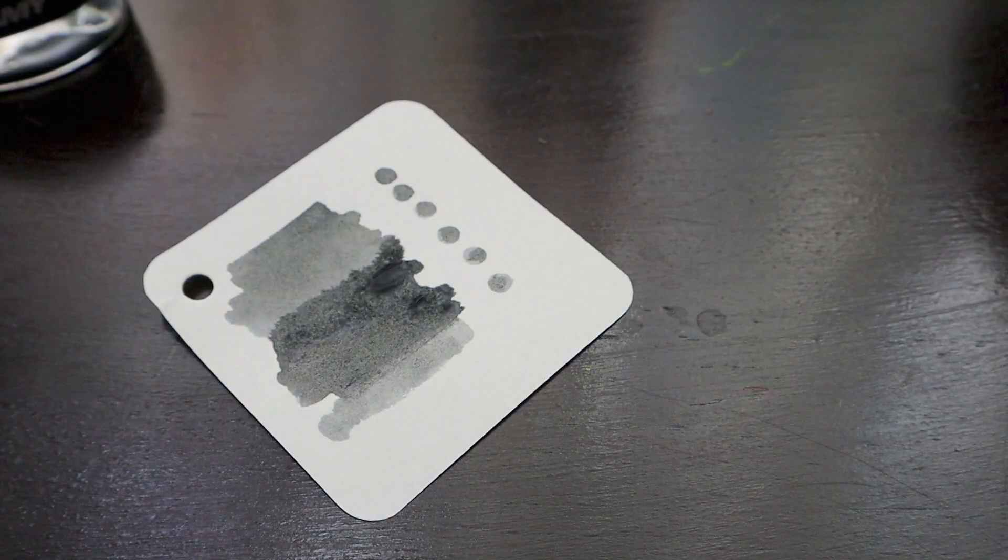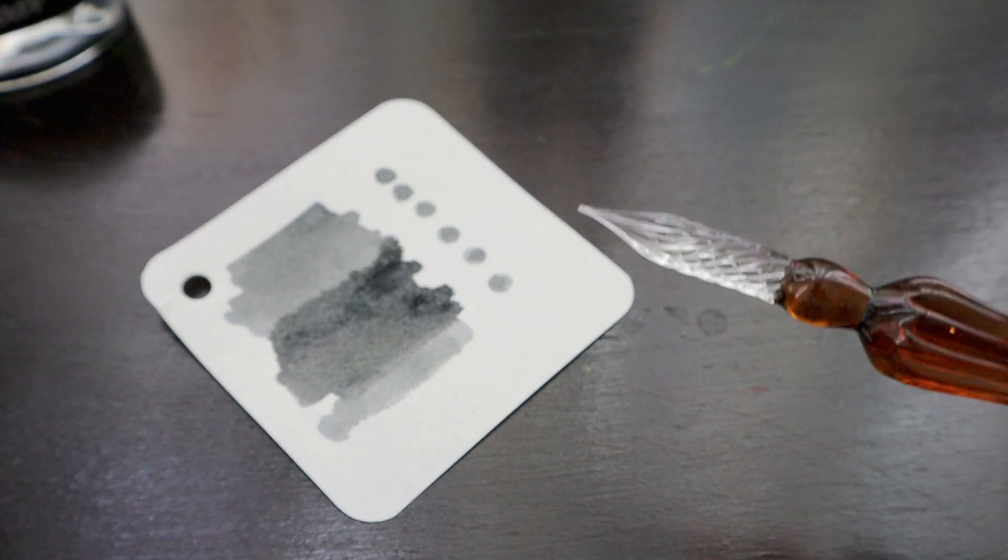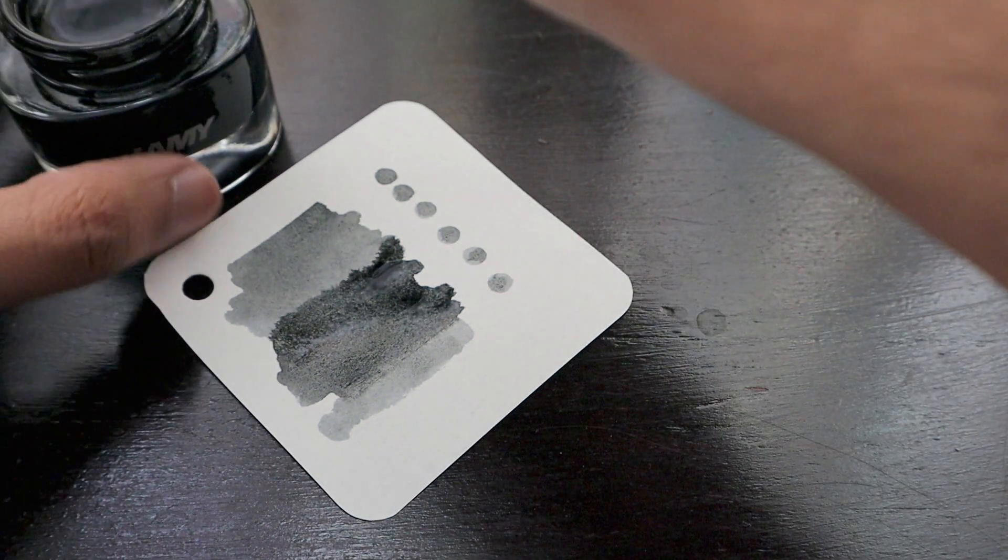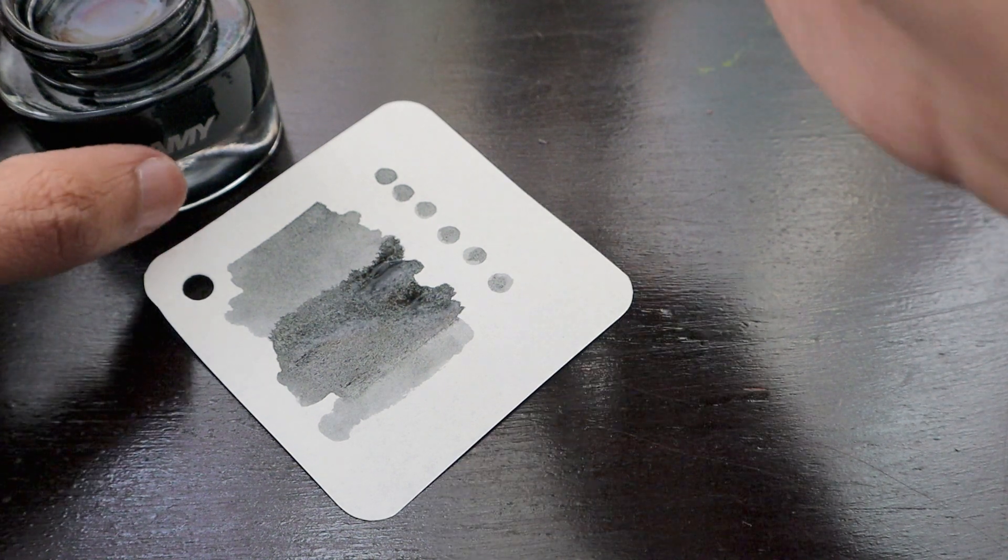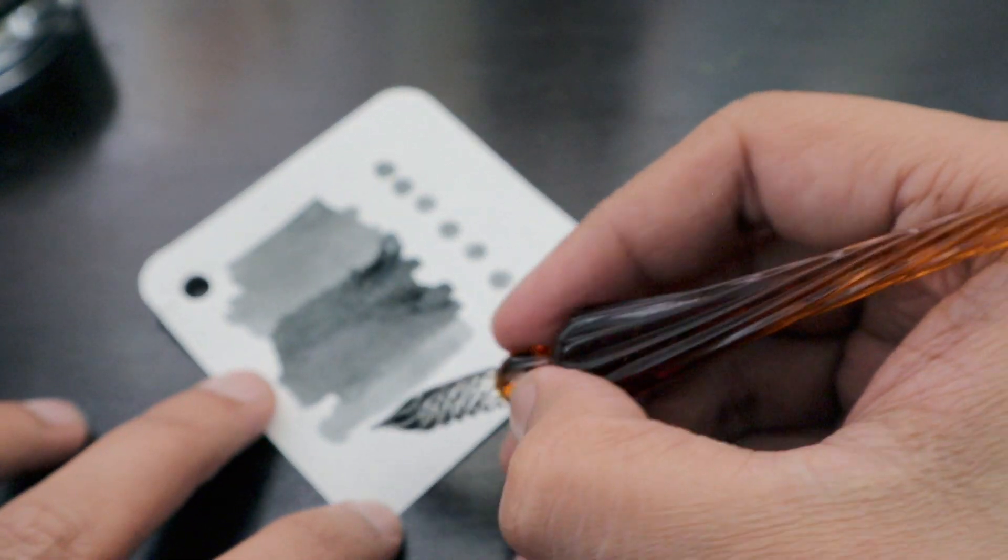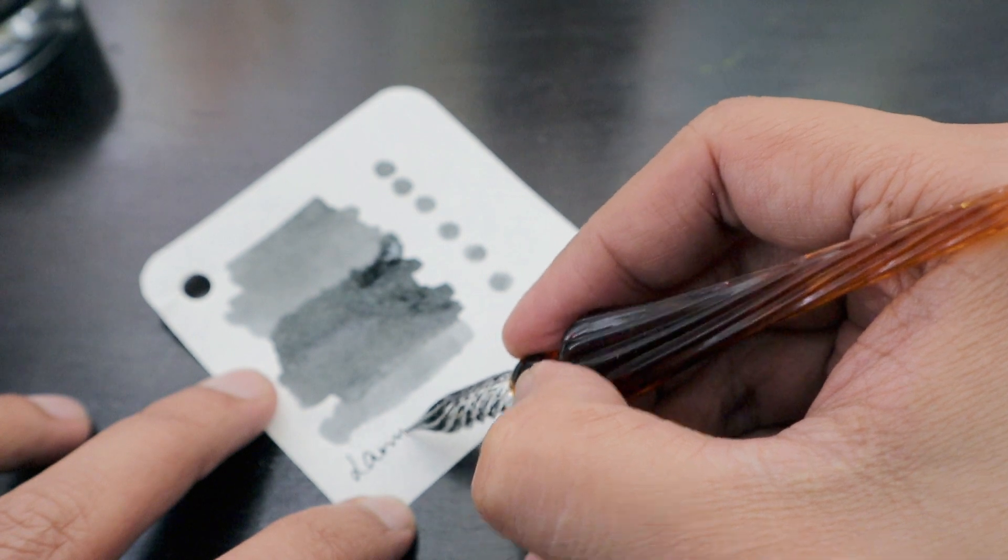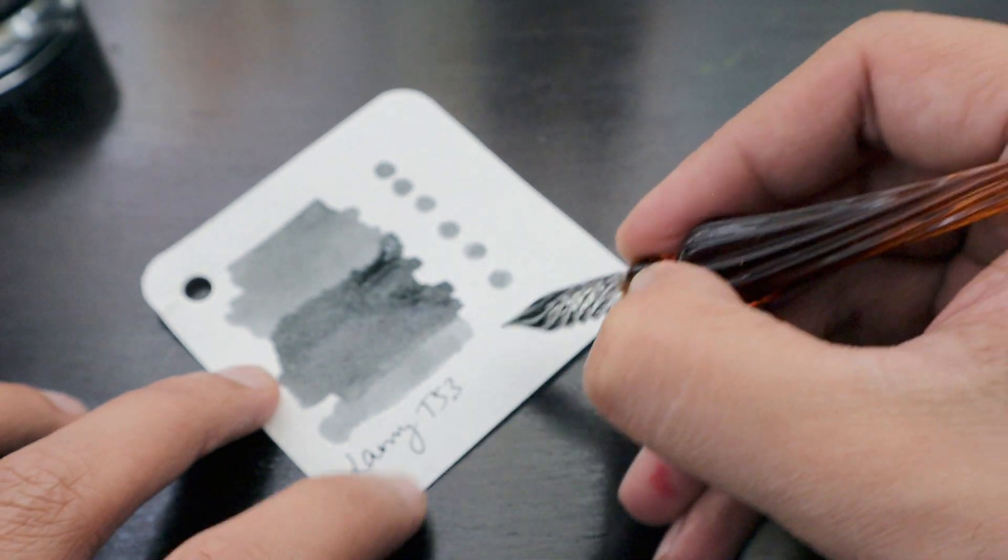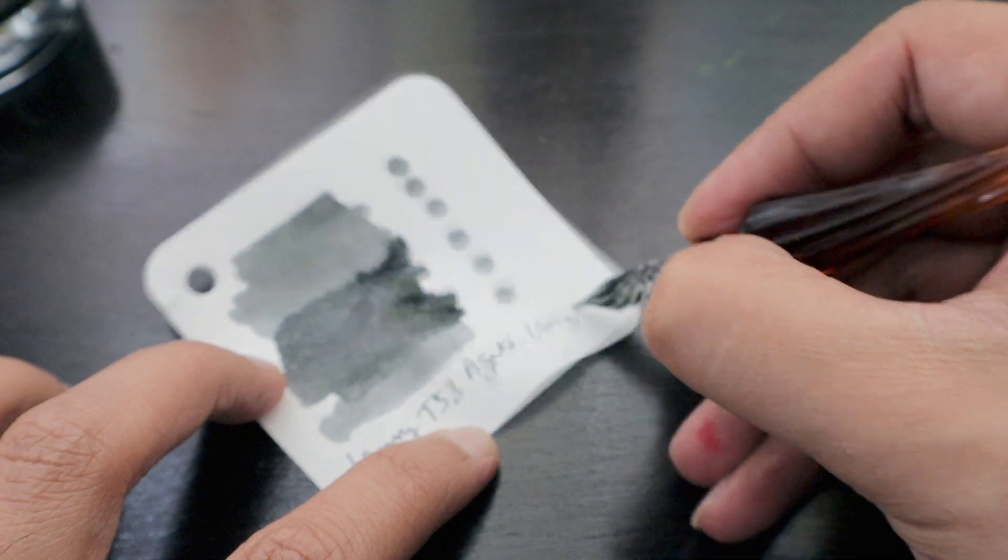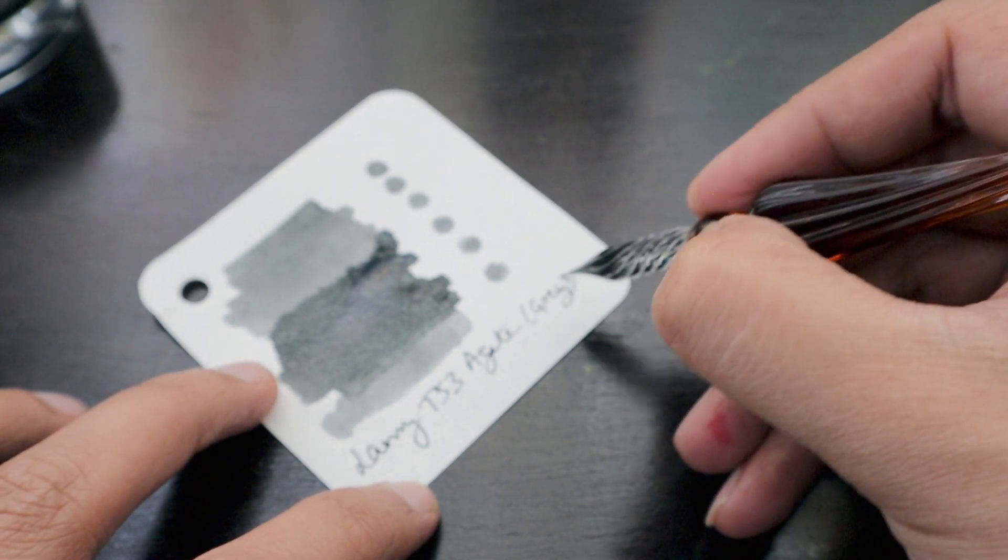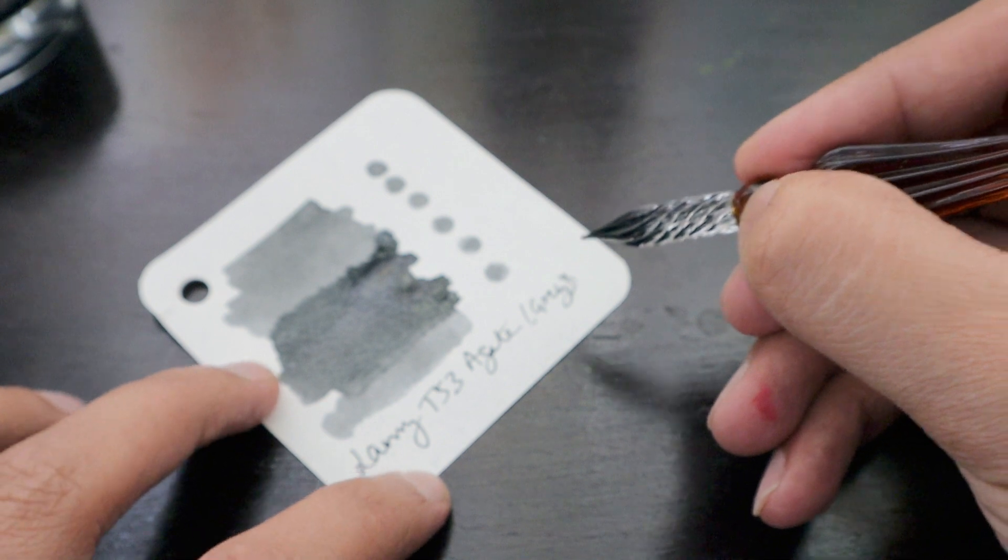Meanwhile, we'll dip our glass pen into the bottle and try to write something with this pen on the ink swab. This is Lamy T53 Agate, or gray color as well.